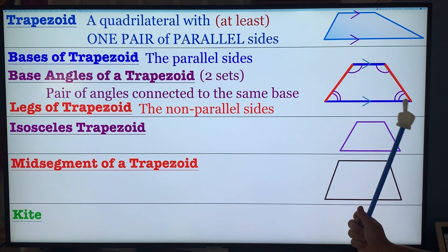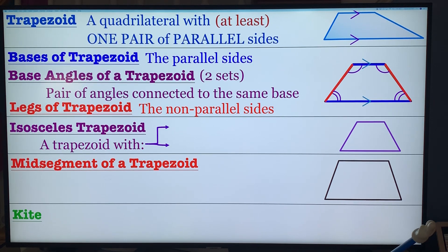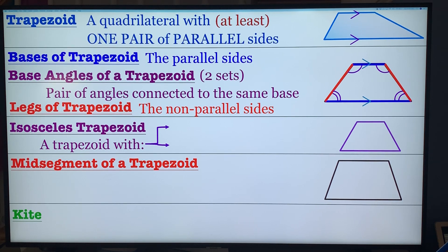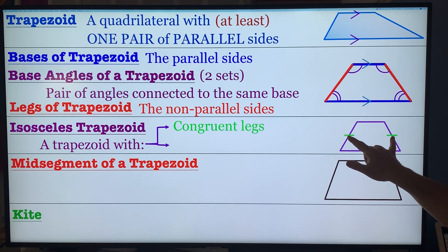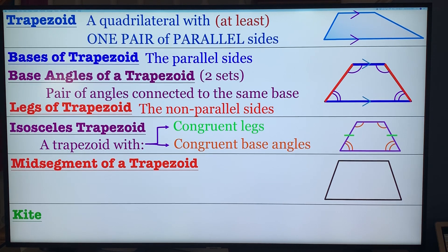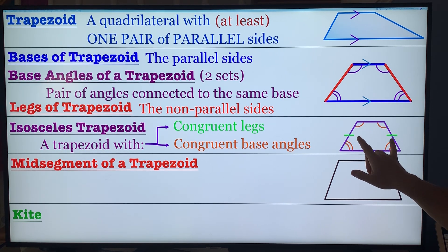An isosceles trapezoid is just a trapezoid with two things: congruent legs — meaning the two legs are congruent, not the bases — and congruent base angles. The base angles are also congruent.